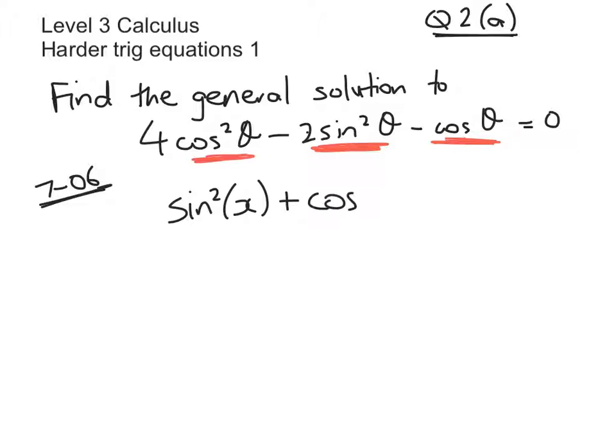Our first Pythagoras identity, which was sin²(x) + cos²(x) = 1. Often doing a substitution with that one is going to help. So in this case, instead of putting sin²θ, we're going to replace it with 1 - cos²θ.